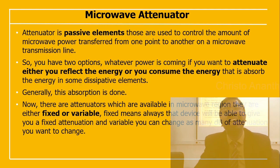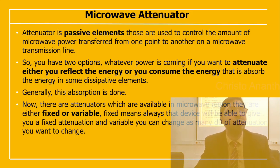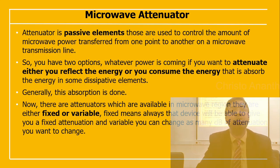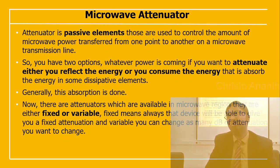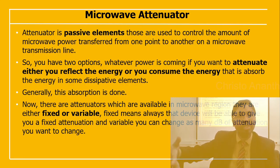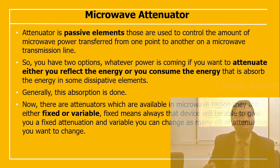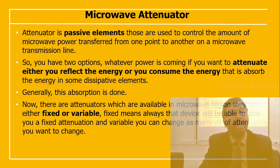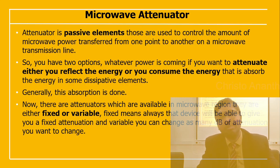An attenuator is not an active element — it is a passive element that controls the amount of microwave power transferred from one point to another in the microwave transmission line. You have two options: you can either reflect the energy or absorb it using dissipative elements. This absorption is what the attenuator achieves.